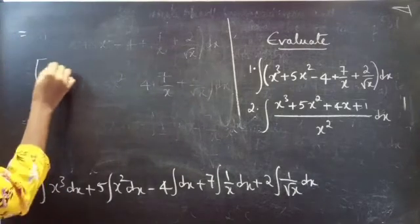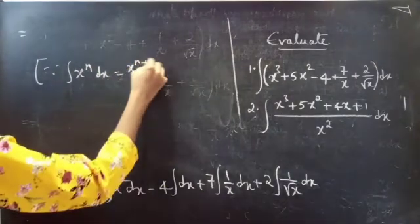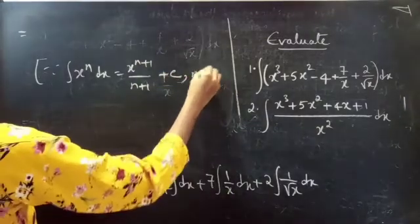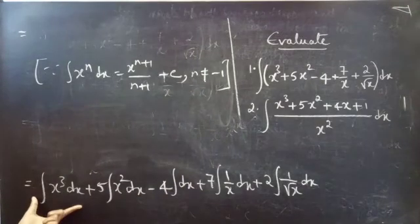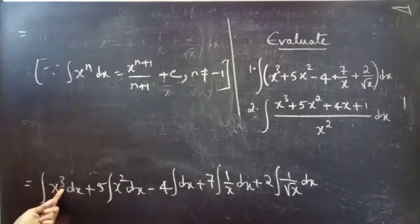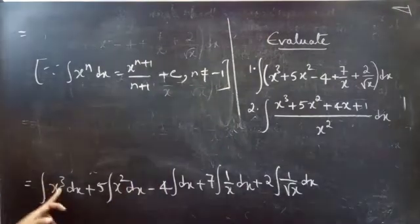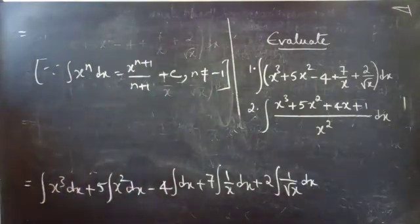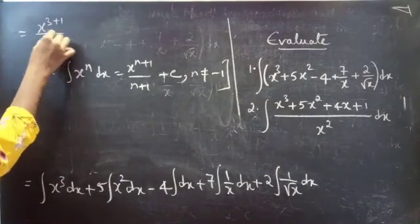This equals to — since we know that integral x power n dx equals x power n+1 by n+1 plus constant C, where n is not equal to minus 1. For the first integral, here you are having n equals to 3. Since n equals to 3 is not equal to minus 1, you can apply this formula.